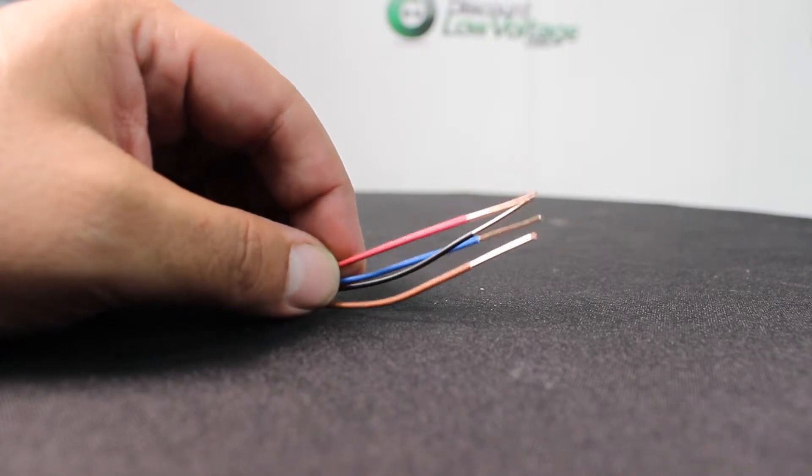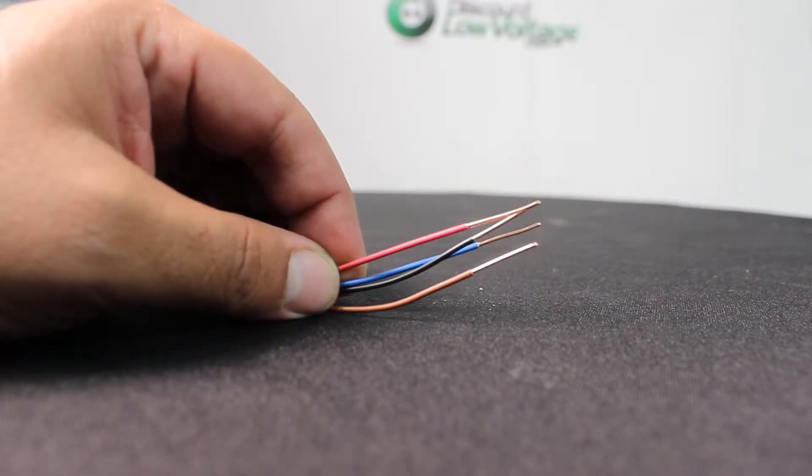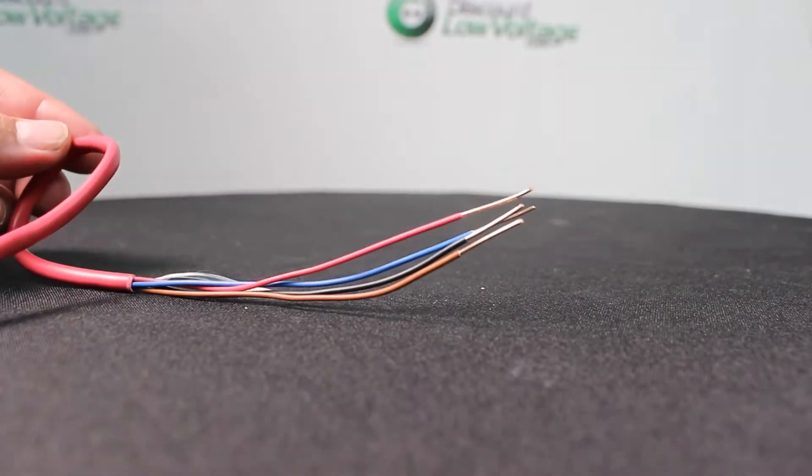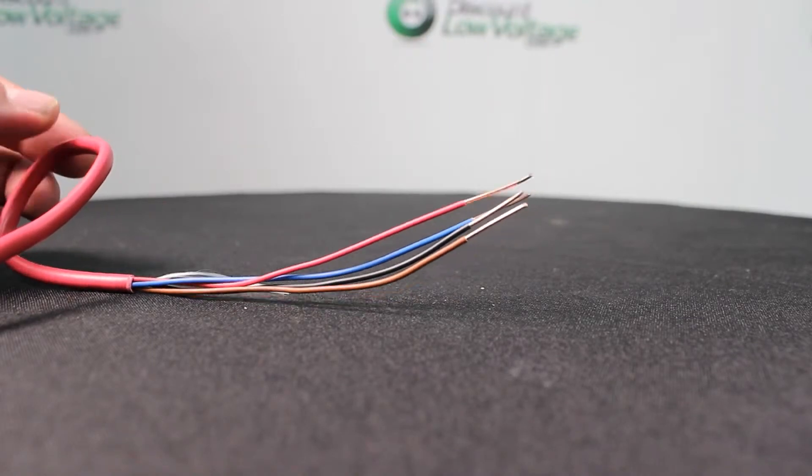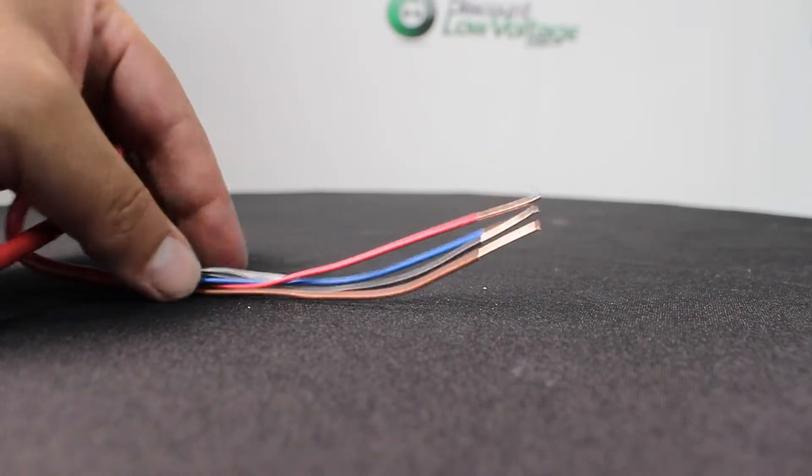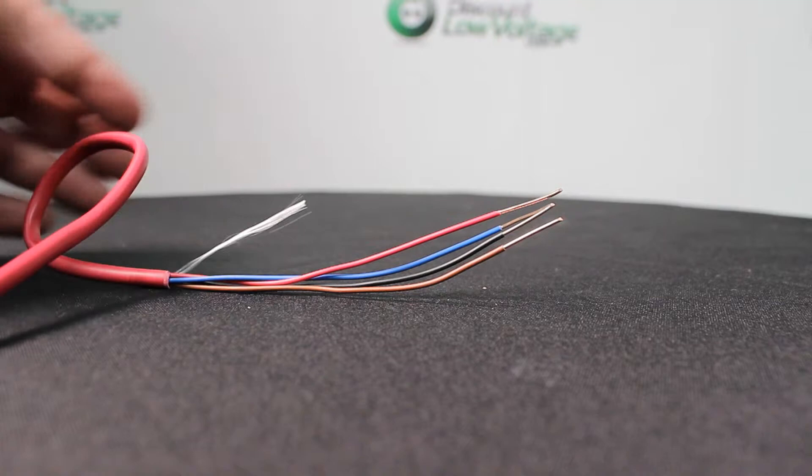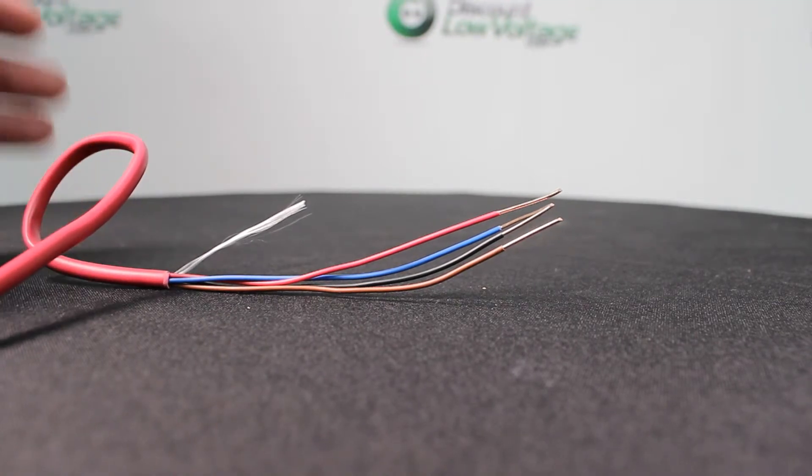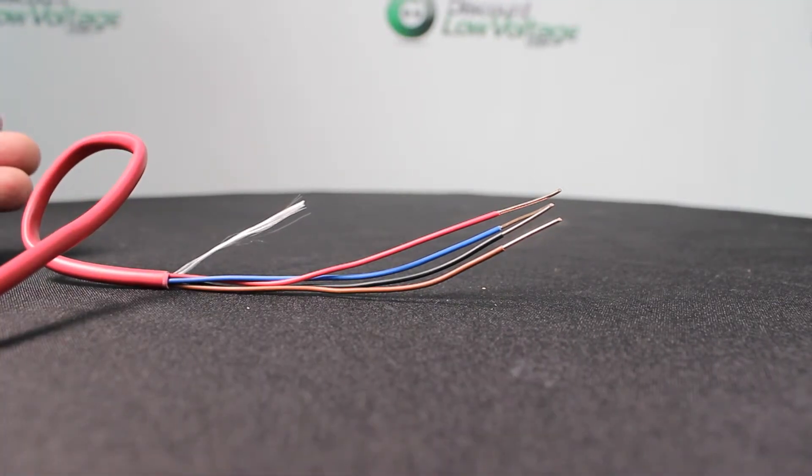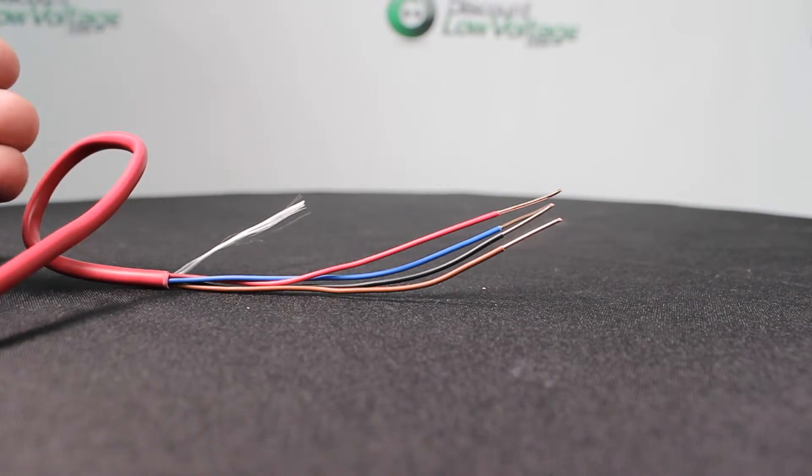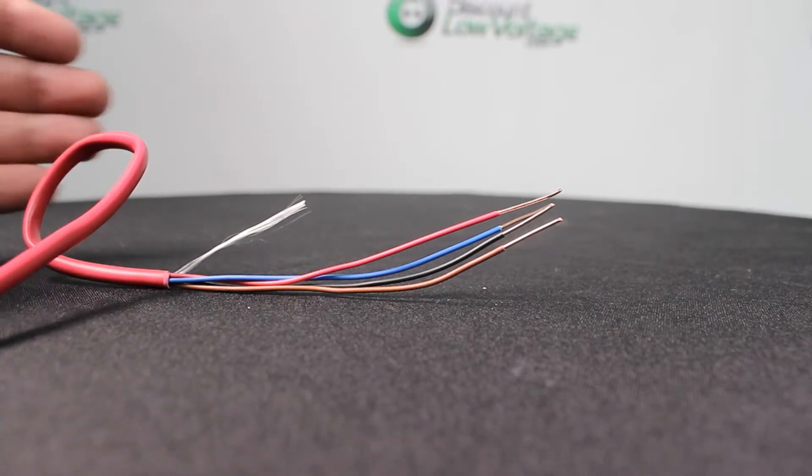Sold on thousand foot reels, the reel is standard, the jacket itself, the red jacket, is also standard, and a rip cord is included that helps you pull the jacket off. There is also a riser version available, and this is non-shielded but a shielded version is also available.